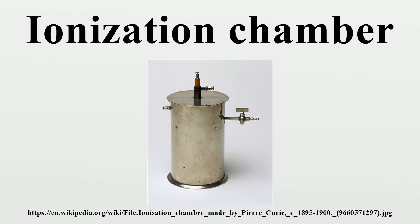Nuclear industry: Ionization chambers are widely used in the nuclear industry as they provide an output that is proportional to radiation dose. They find wide use in situations where a constant high dose rate is being measured, as they have a greater operating lifetime than standard Geiger-Müller tubes, which suffer from gas breakdown and are generally limited to a life of about 10^11 count events. Additionally, the Geiger-Müller tube cannot operate above about 10^4 counts per second due to dead time effects, whereas there is no similar limitation on the ion chamber.